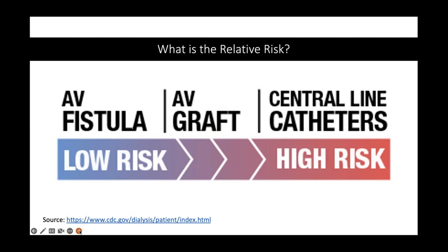CDC has a great graphic that talks about the different general levels of risk associated with all three different types: AV fistula, AV graft, and central line catheters. As we've mentioned multiple times, the central line catheter is not the ideal solution — it's great for temporary means, but our goal should be to transition to a fistula as quickly as possible when a patient is a candidate. This requires a more robust vascular access management plan, which is important for folks receiving dialysis in the outpatient setting, as well as long-term care residents and acute care patients.